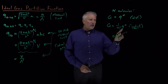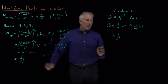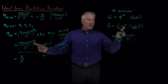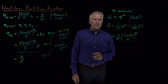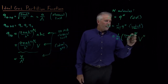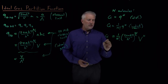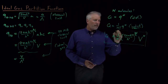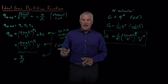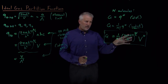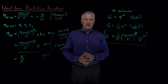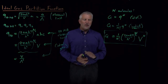So the full ideal gas partition function is (1/N!) × (2πmkT/h²)^(3N/2) × V^N. This applies when the energy levels are so closely spaced that the classical limit holds. With this partition function in hand, we can go on to calculate the thermodynamic properties of a gas.